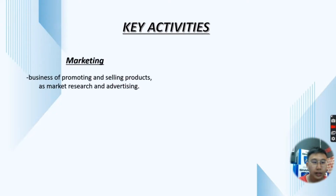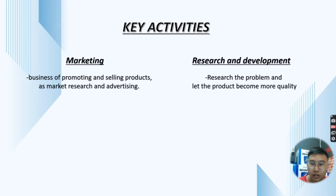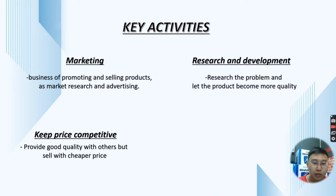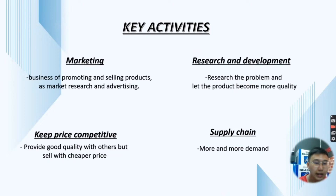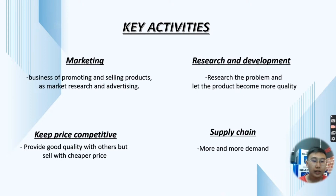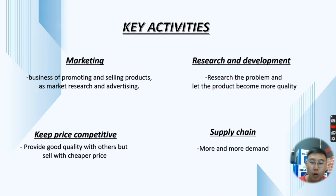Next, it's about Key Activities. We have Marketing, Research and Development, Keep Price Competitive, and Supply Chain. Marketing is about promoting and selling products through market research and advertising. Research and Development is about researching product problems and improving product quality continuously. Keep Price Competitive means we provide good quality compared to others but sell at a cheaper price.